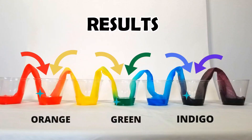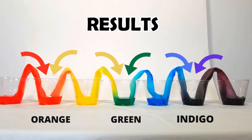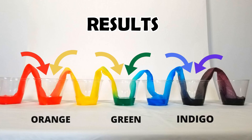So let's talk a little bit about the results now. As you can see, secondary colours were formed: the red and the yellow made orange, the yellow and the blue made green, and the blue and the violet made indigo.